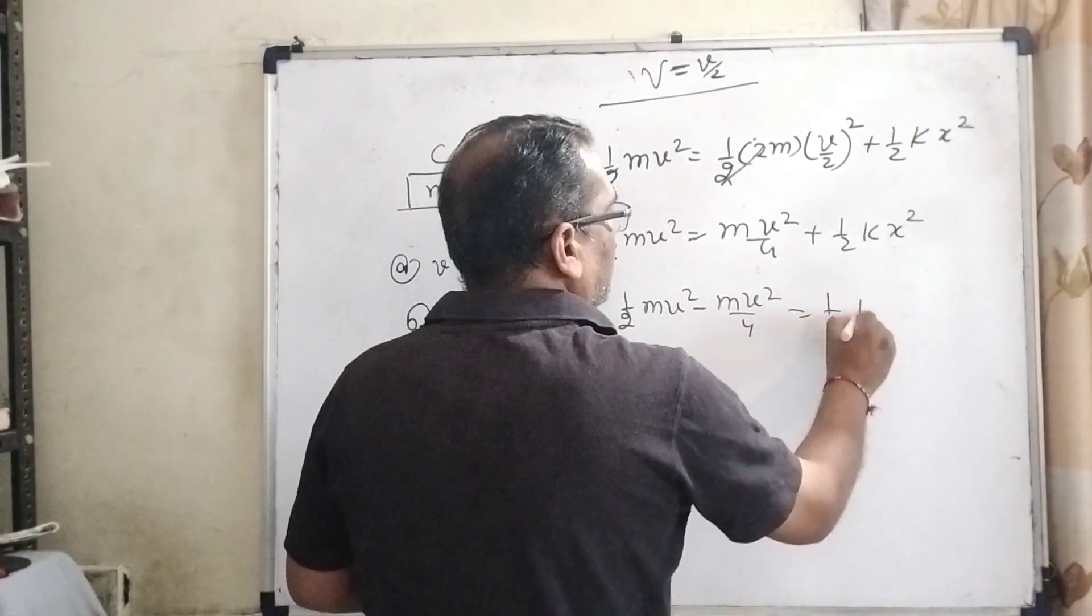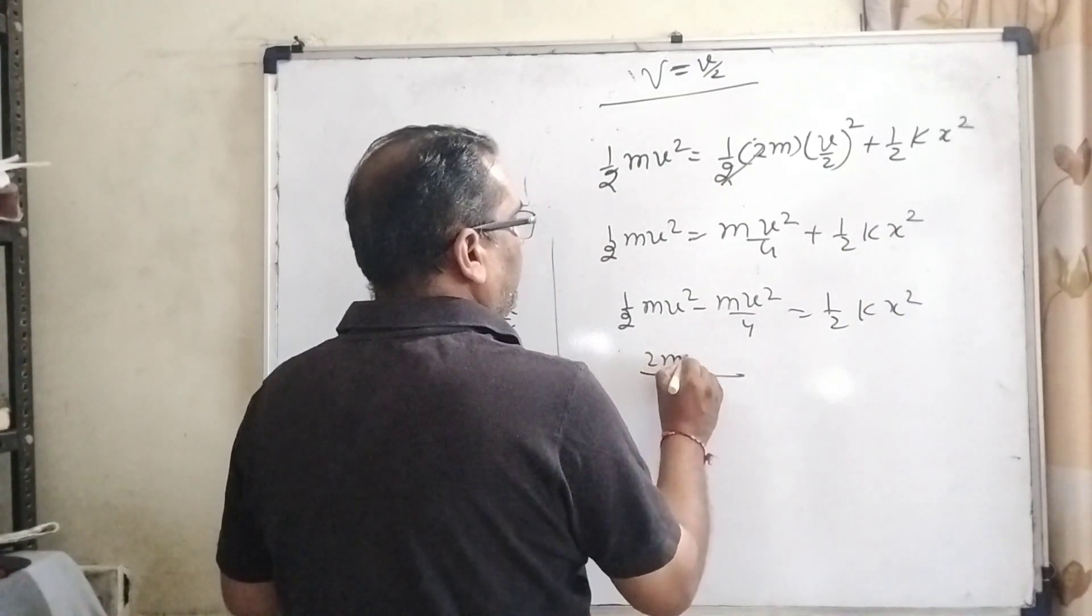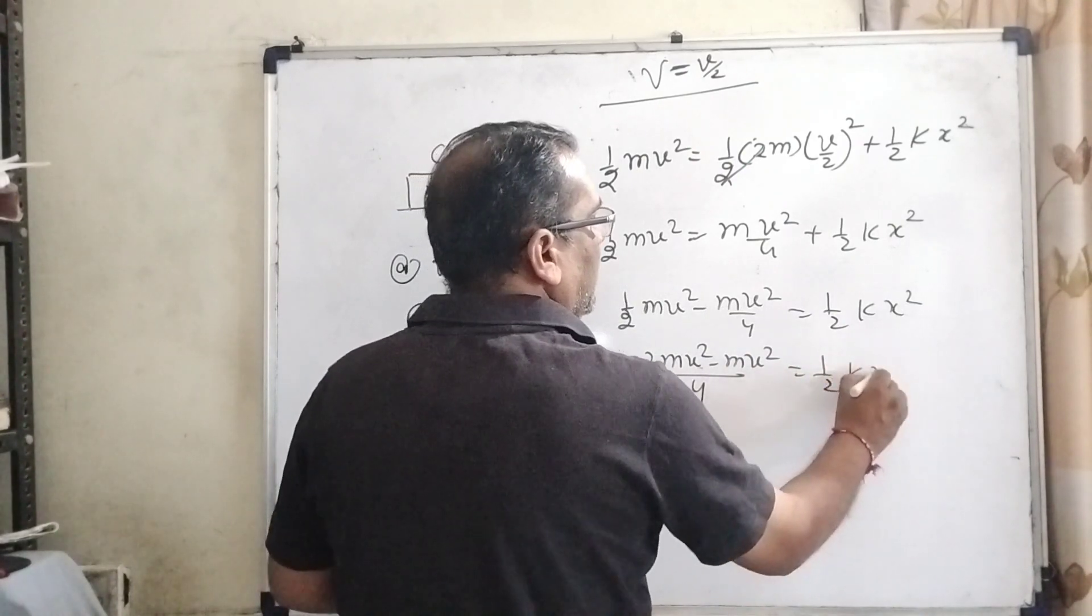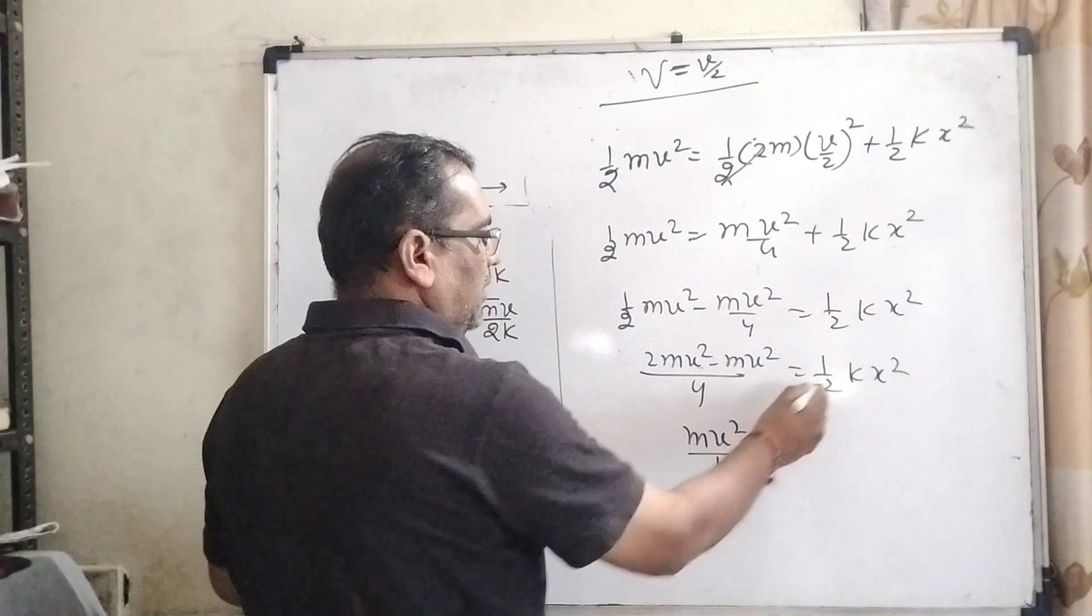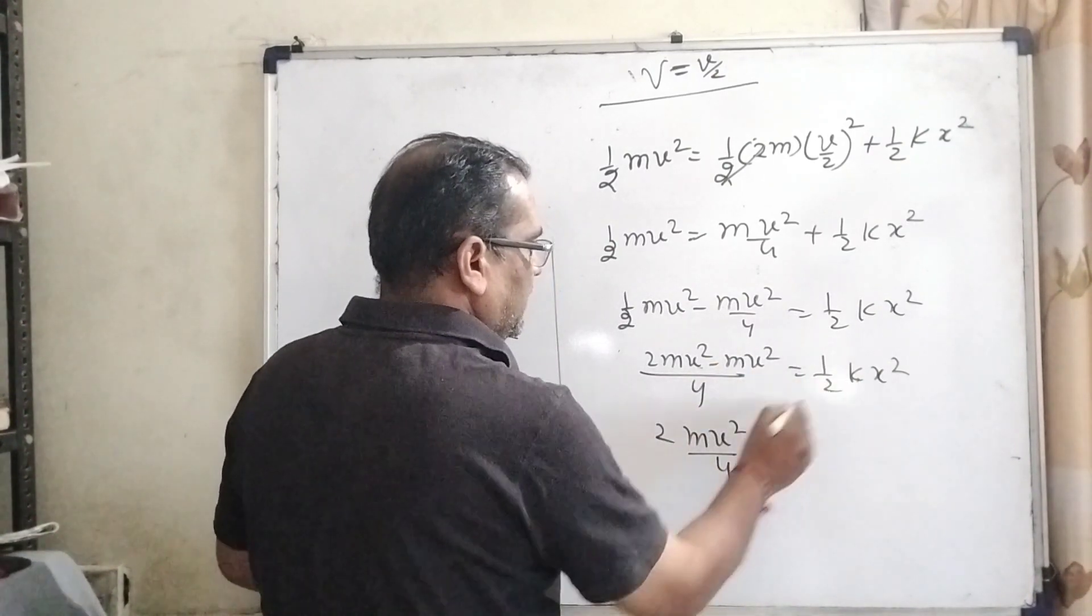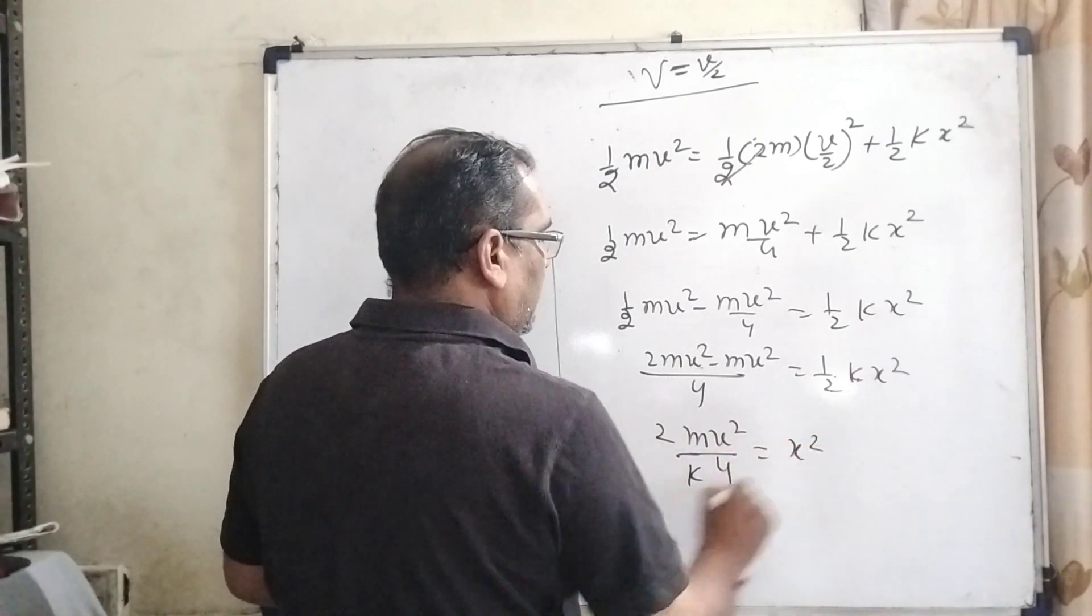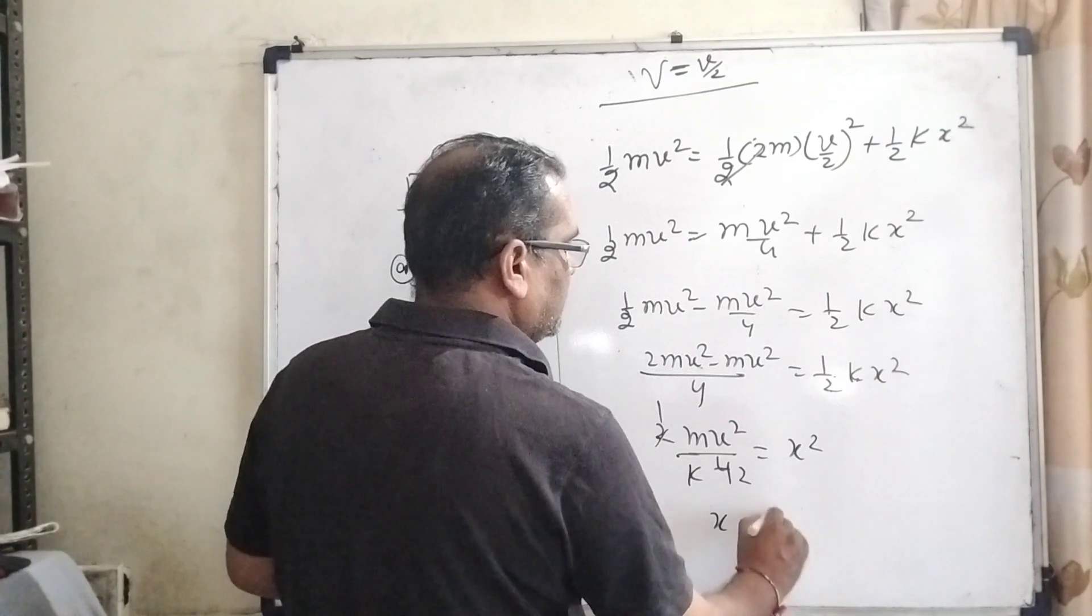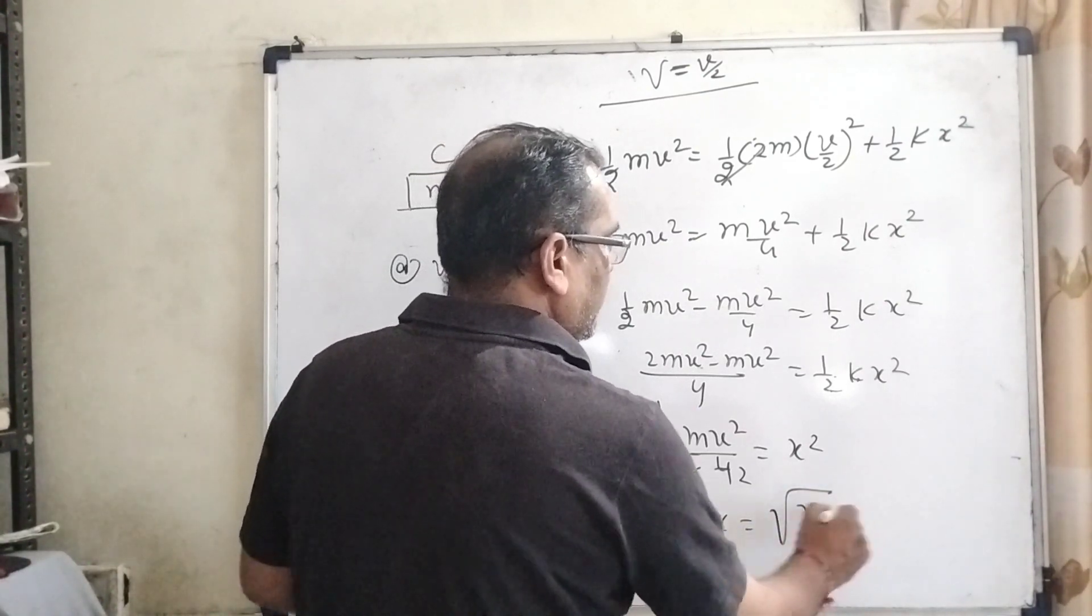Now ½mv² - mv²/4 = ½kx². Here mv²/4, multiply by 2, and k comes to the denominator on the left side equals x². Here 2 times 1 is 2, 2 times 2 is 4, and x can be written as √(mv²/2k). Here v² is out of the root, so v√(m/2k).